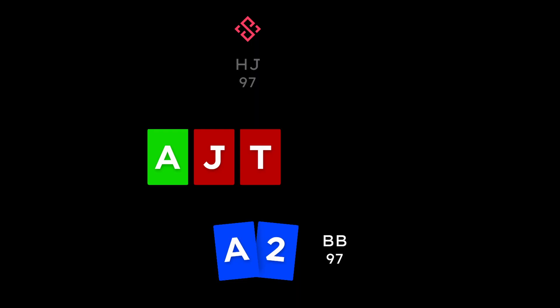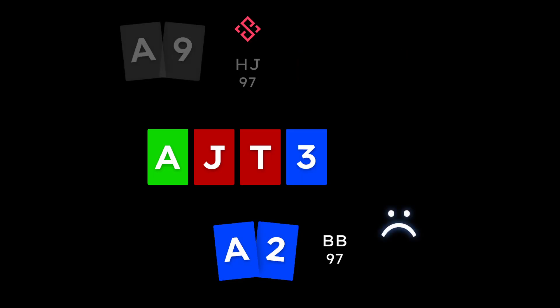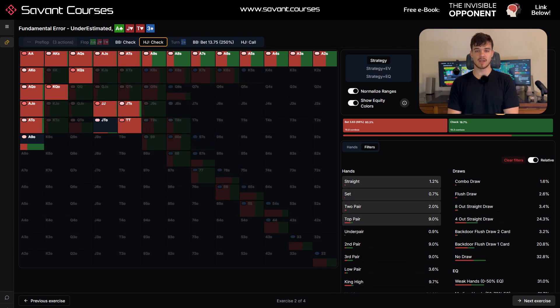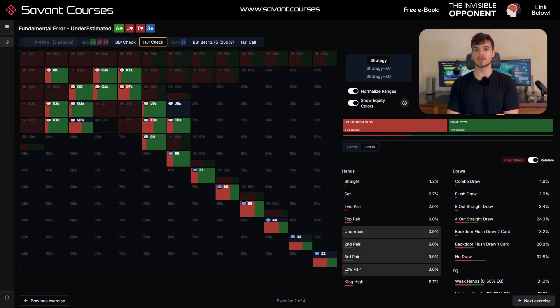The big problem with this is that it causes hijack's checking range to become extremely weak, and probably a lot weaker than you might think. Imagine you're playing as big blind, and hijack checks on the flop. The turn is now the three of diamonds, and you have the option to bet. In theory, you would have to play very cautiously here, because hijack's checking range is balanced and fairly strong. But because hijack is making this fundamental error of betting too many strong hands on the flop, and mostly checking with their weak pairs, big blind no longer has to be careful.